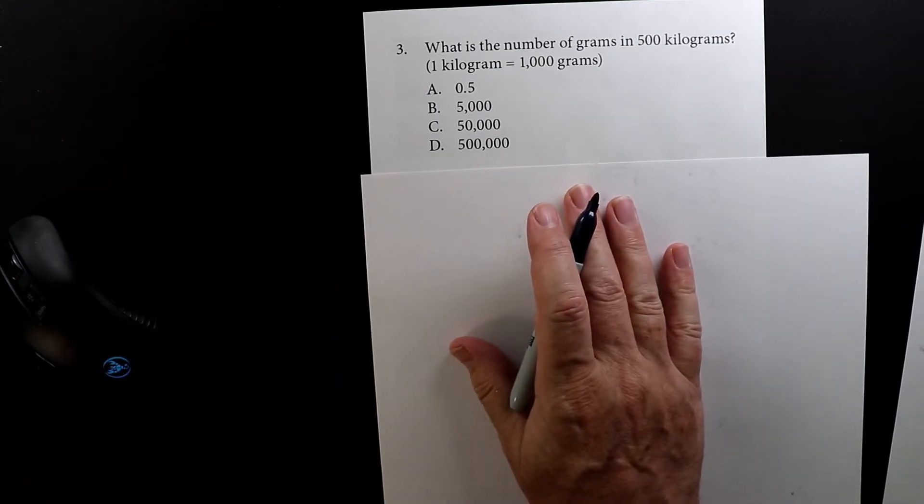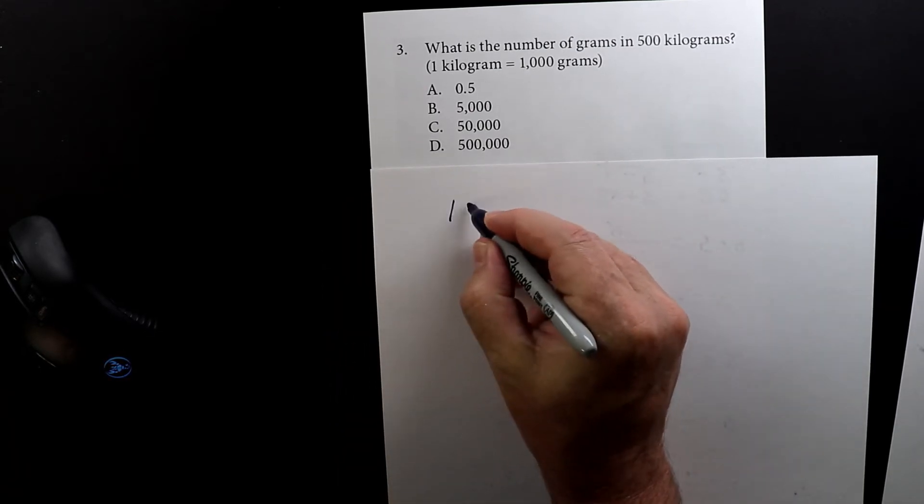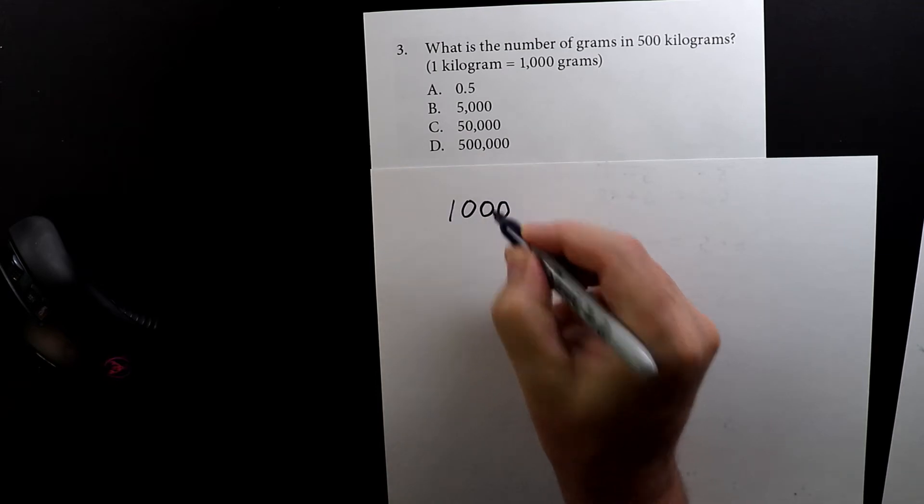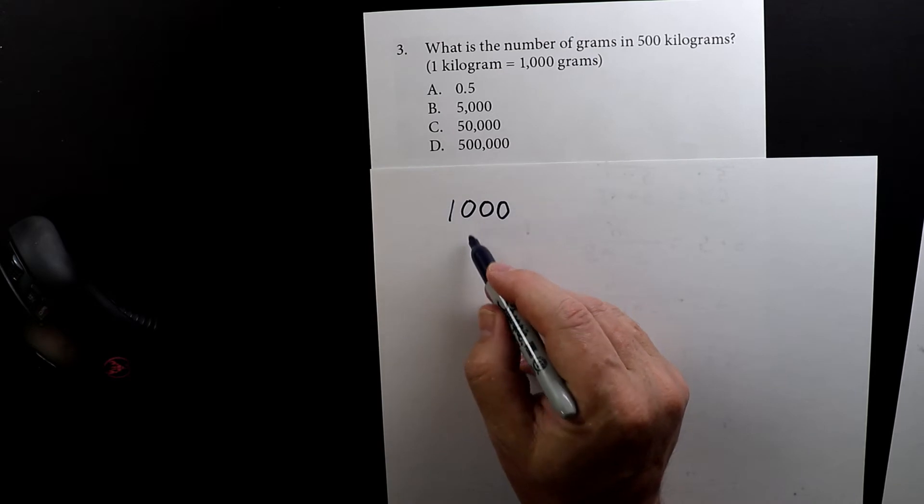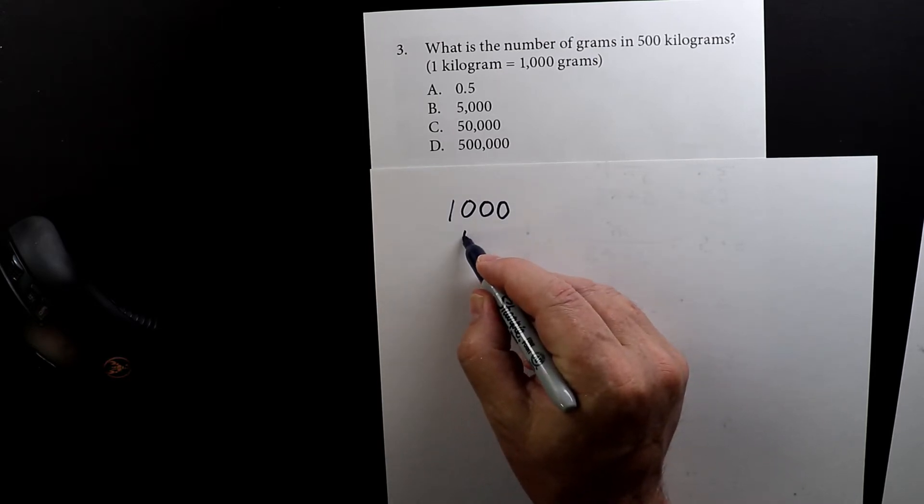Since a thousand is bigger than 500, I'm going to put the thousand on top. That's a lot of zeros, and here I'm going to keep the numbers nice and neat, nice and lined up.